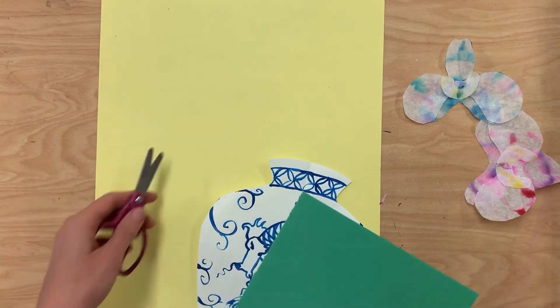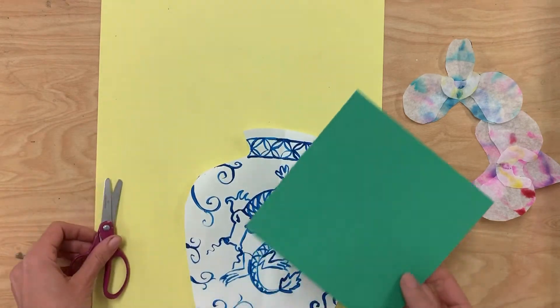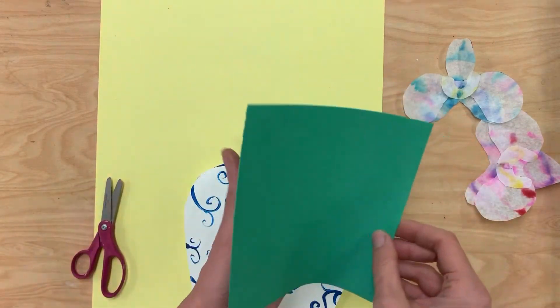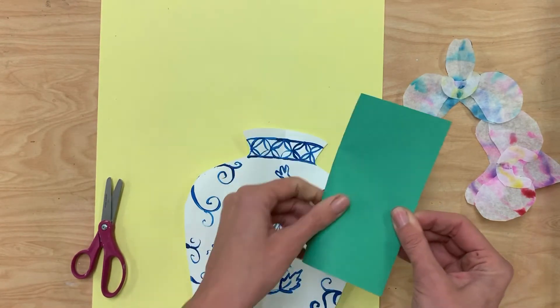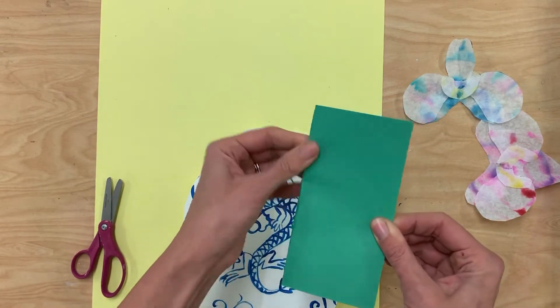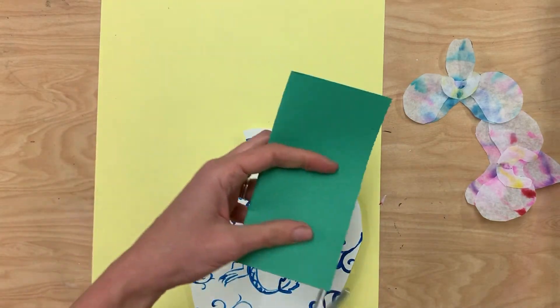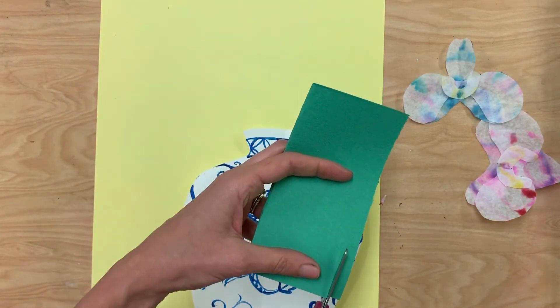And the final step to assemble our little Ming vase here is to create the leaves and stems. So I'm going to take a little six inch square piece of paper, fold it in half, make sure it's even. And then to make the stems, I'm just going to cut a thin strip here.